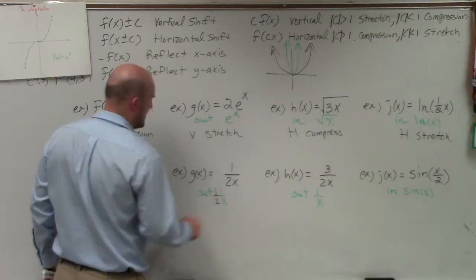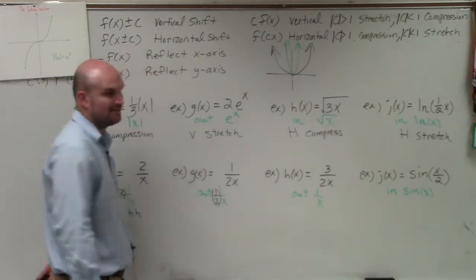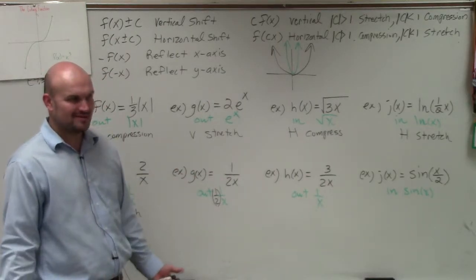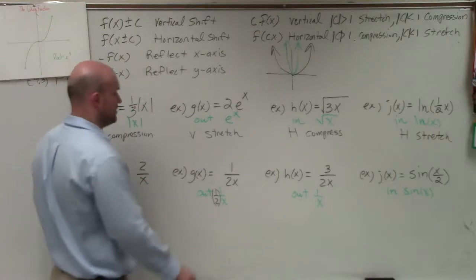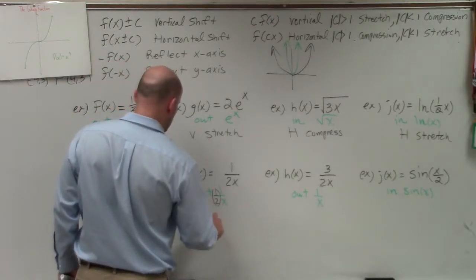I could rewrite this as multiplying it by 1/2. I could factor out the 1/2 because what's 1/2 times 1 over x? 1 over 2x. So therefore, the outside, that's fraction. So therefore, you could say that it is a vertical compression.